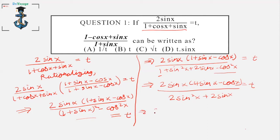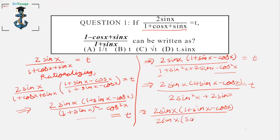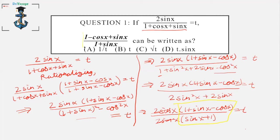We take 2sinx common in the denominator, giving us 2sinx·(1 + sinx - cosx) over 2sinx·(sinx + 1). We cancel 2sinx and observe the resulting expression matches what we're asked. So (1 - cosx + sinx) / (1 + sinx) = t, which is answer option B.